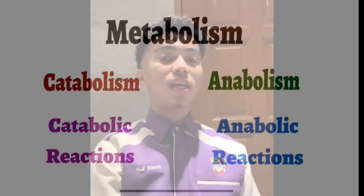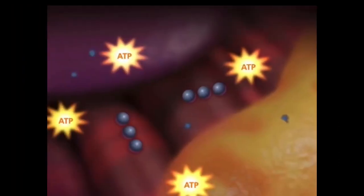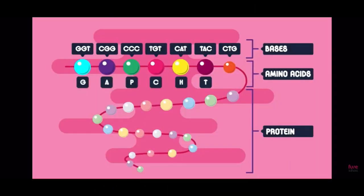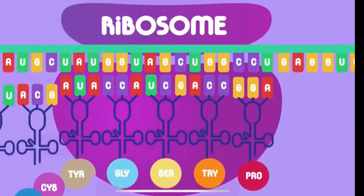Hi guys, I'm Alin and I'm going to talk about the production of energy through cellular respiration. In chapter 5, we already learned about the two types of metabolism: anabolism and catabolism. Both of these reactions release and use energy in their process. For your information, the anabolism process, such as protein formation which is the basic muscle substance, will not occur without the presence of energy.